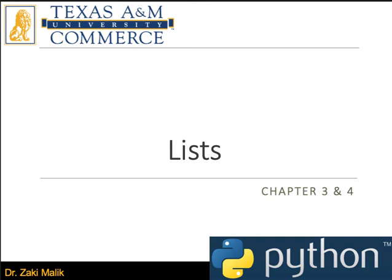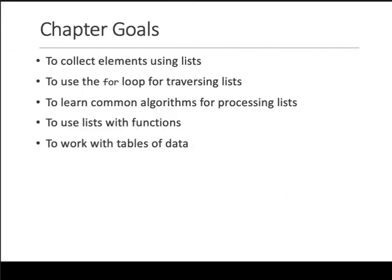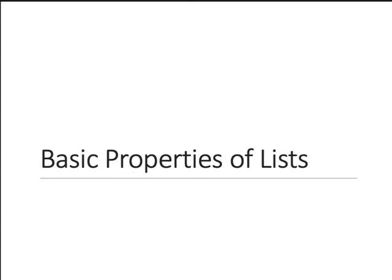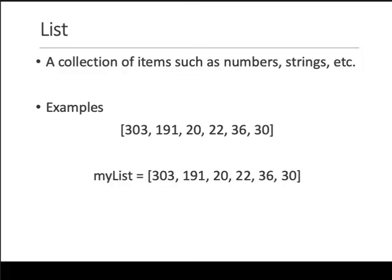In this lecture we're going to go over lists, which are constructs that help us in writing code. Let's start with the chapter goals and the basic properties of lists. So what is a list? A list is basically a collection of items. The items can be anything—they can be numbers, strings, floats, etc.